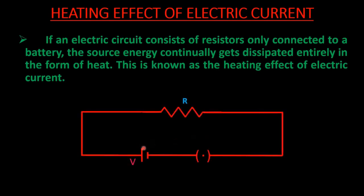In a circuit where only a resistor is connected to the battery, the energy stored in the battery continuously decreases and is given out by the resistor as heat to the surroundings. When current flows from the positive to the negative terminal through the resistance and conducting wire, the resistance of both the wire and resistor opposes the current flow, causing them to heat up. Thus electrical energy is converted into heat given to the surroundings.